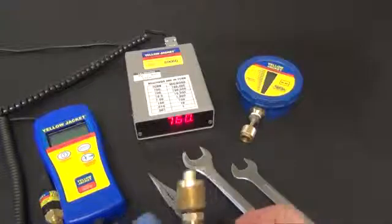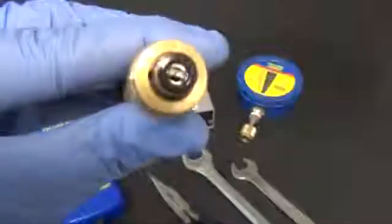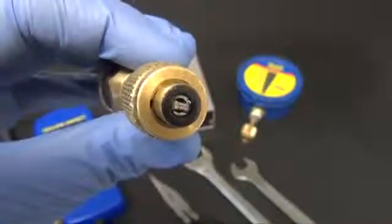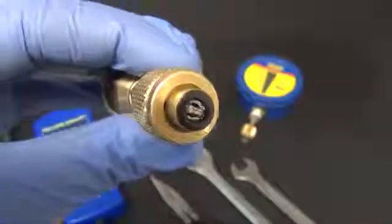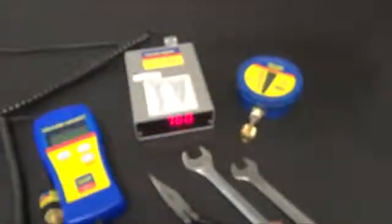We can first do a visual inspection of the gasket and the depressor. First look at the gasket for any obvious signs of oil. The gasket will appear wet or shiny. If so, there is oil contamination.